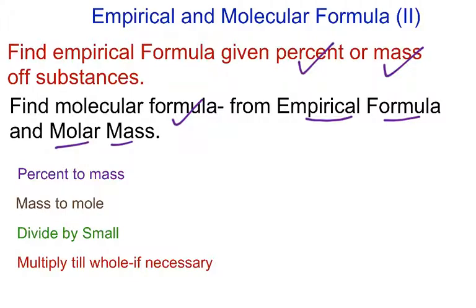The memory device goes like this: we change the percent to mass, we will then change the mass to moles. Now whichever number you get that's the smallest in terms of moles, you divide everything by that number. And if we get a fraction like 0.5, we'll multiply it till whole. So we'll use an example to explain the memory device.